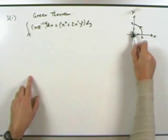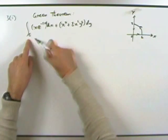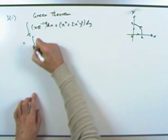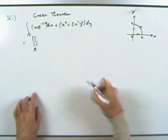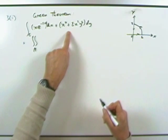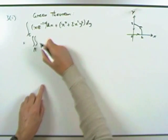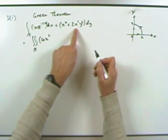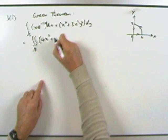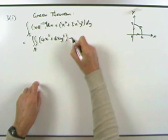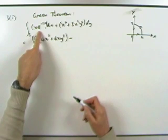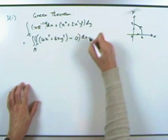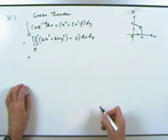To evaluate that line integral over the length of that curve, instead you could carry out the area integral of ∂Q/∂x — so that would be 4x³ + 4xy² — minus ∂P/∂y, where there's no mention of y, so that's just zero, of dx dy. So what's that then?